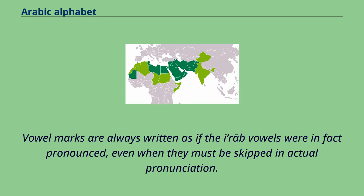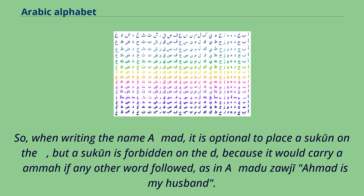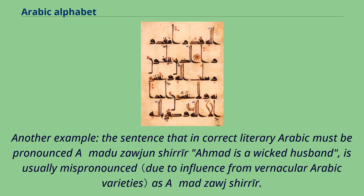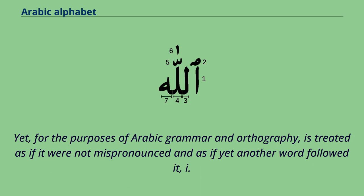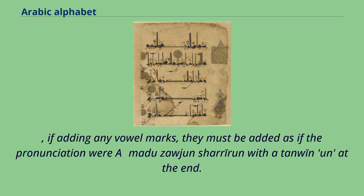Vowel marks are always written as if the Arabic vowels were in fact pronounced, even when they must be skipped in actual pronunciation. So when writing the name Ahmad, it is optional to place a sukun on the H, but a sukun is forbidden on the D, because it would carry a damma if any other word followed. For the purposes of Arabic grammar and orthography, the word is treated as if it were not mispronounced and as if yet another word followed it — if adding any vowel marks, they must be added as if the pronunciation were the full case-inflected form.